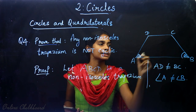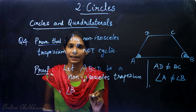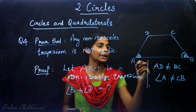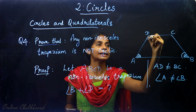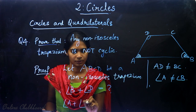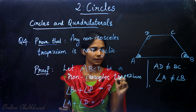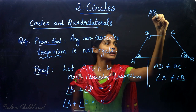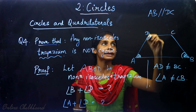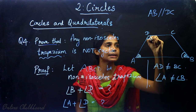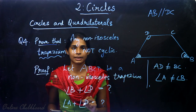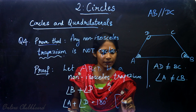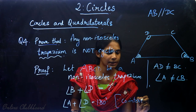Since AB is parallel to DC, and taking AD as the transversal, angle A and angle D are co-interior angles. The sum of co-interior angles is 180 degrees. So we can say that angle A plus angle D is equal to 180 degrees.